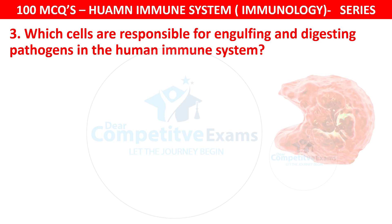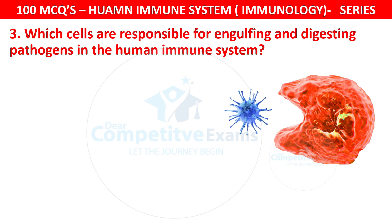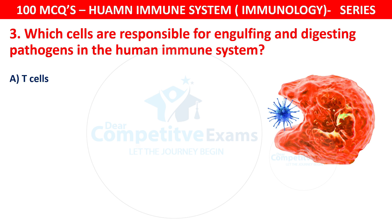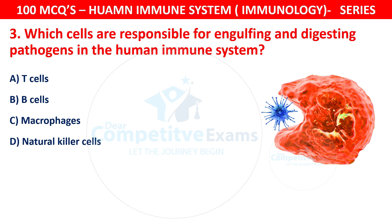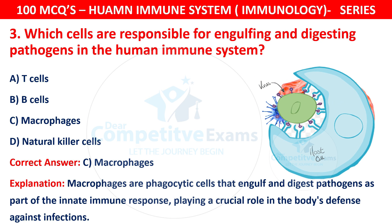Question 3. Which cells are responsible for engulfing and digesting pathogens in the human immune system? The correct answer is C — macrophages. Macrophages are phagocytic cells that engulf and digest pathogens as part of the innate immune response, playing a crucial role in the body's defense against infection.